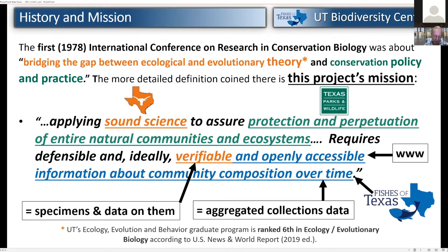Gary and I were in our doctoral programs in 1978 during the first international meeting on conservation biology. That discipline was defined as bridging the gap between ecological and evolutionary theory and conservation policy and practice. That's what UT does — we're number six in the country for ecological and evolutionary graduate programs. TPWD is all about policy and practice. The discipline also emphasized sound science, protection and perpetuation of natural communities and ecosystems, and defensible, ideally verifiable data. We make all this openly accessible on the web, aggregating collections well beyond our own.